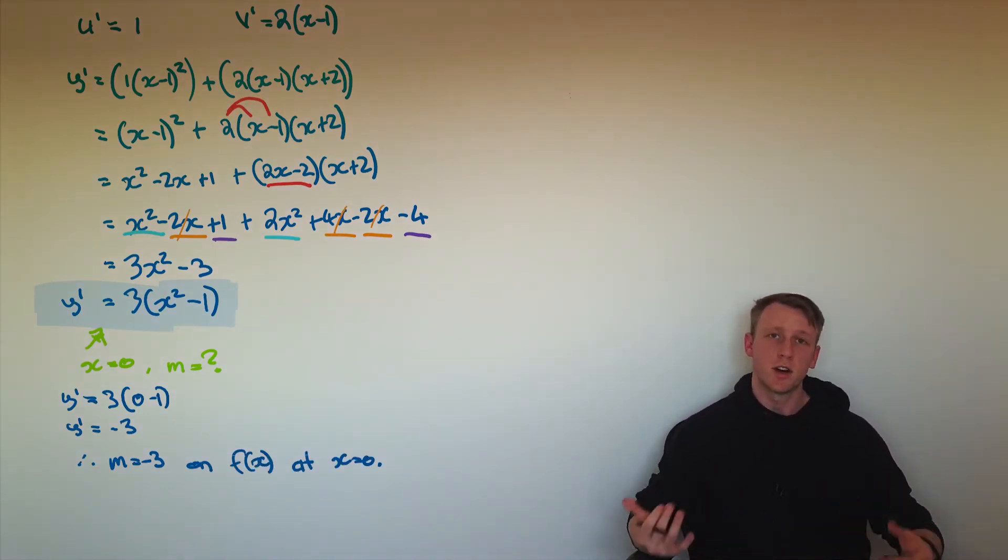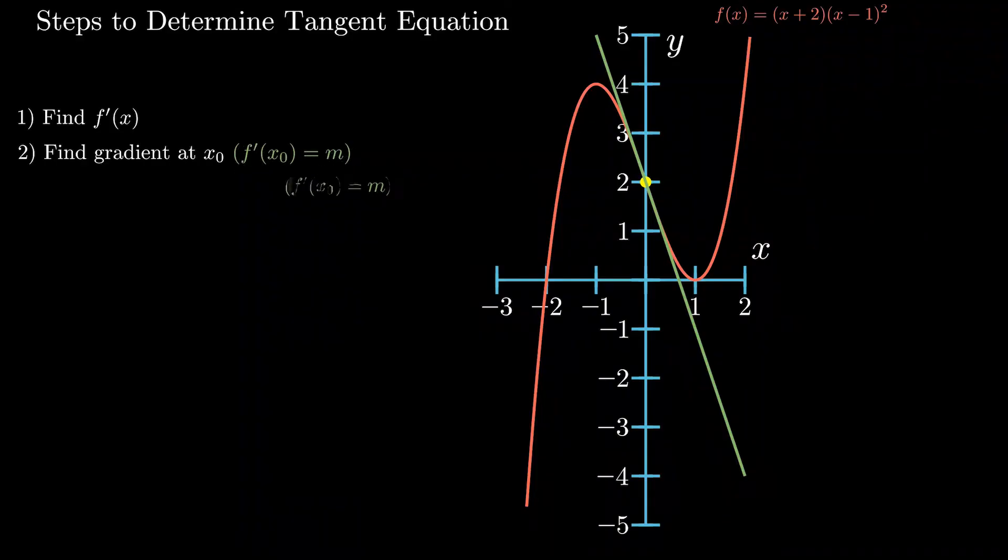Okay, so that step number two is to find the value of that gradient there. We can see it is equal to negative 3.